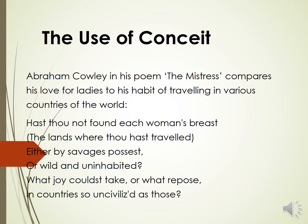Consider the following example: Abraham Cowley, in his poem 'The Mistress,' compares his love for ladies to his habits of traveling in various countries of the world, and says: 'Hast thou not found each woman's breast the land where thou hast traveled, either by savages possessed or wild and uninhabited? What joy could'st thou take, or what repose, in countries so uncivilized as those?'